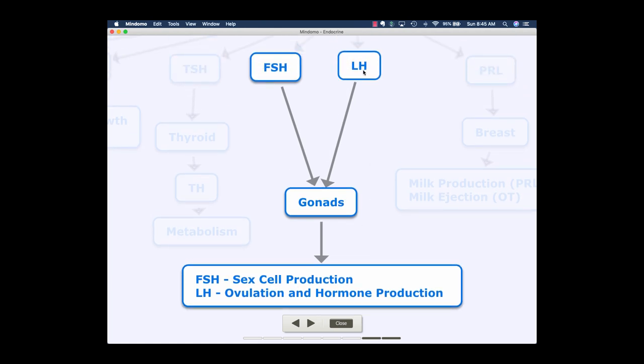LH has a different role. LH is luteinizing hormone, and the 'L' in that hormone name comes from corpus luteum — a structure that appears as part of the menstrual cycle in the female. We'll talk about that in more detail in reproduction. Essentially, luteinizing hormone acts on the gonads and gives you ovulation in the female and hormone production in both sexes. So this is the hormone responsible for production of estrogen and progesterone in the female, and testosterone in the male.